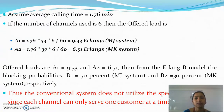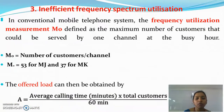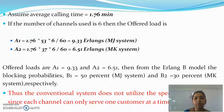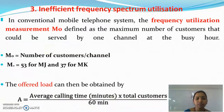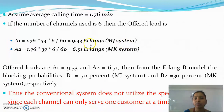We will prove that the spectrum utilization is inefficient through an example. Assuming the average calling time is 1.76 minutes, and the number of channels used is 6, the offered load A1 = 1.76 × (53 × 6) / 60 minutes = 9.33 Erlangs for the MJ system.